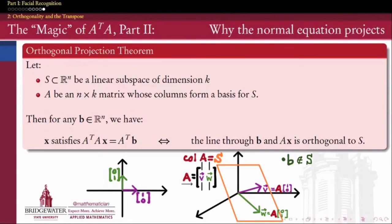That's the hypothesis, so under these circumstances, here's what the theorem guarantees. The theorem guarantees that if I have a vector X which satisfies the normal equations, then, and only then, will the line passing through B and AX, B is the point we're trying to project onto S, that the line through B and AX is orthogonal to S. So here's the picture.